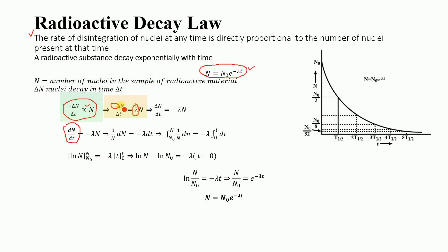Multiplying both sides of the equation by minus one, we get dN/dt = −λN.